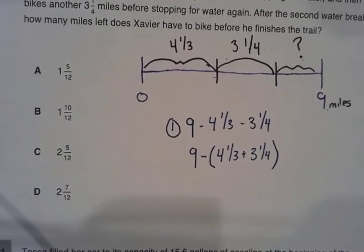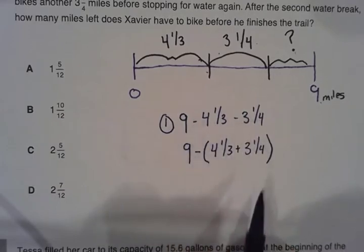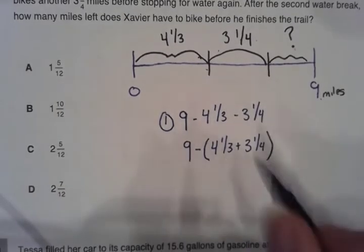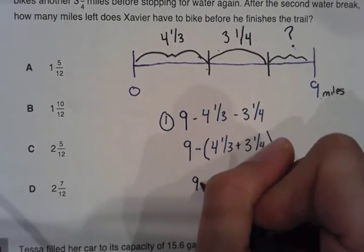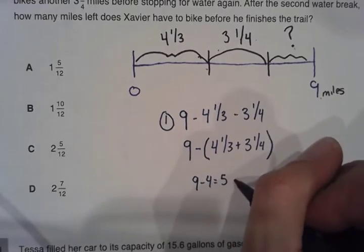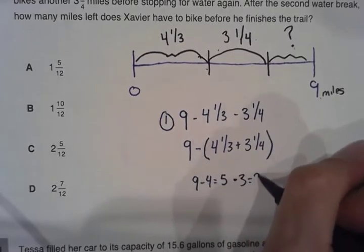So what I'm going to do first is just subtract these whole numbers. So nine minus four, then nine minus three. Nine minus four equals five, then five minus three equals two.